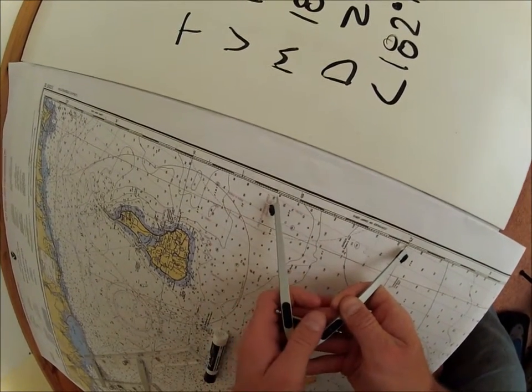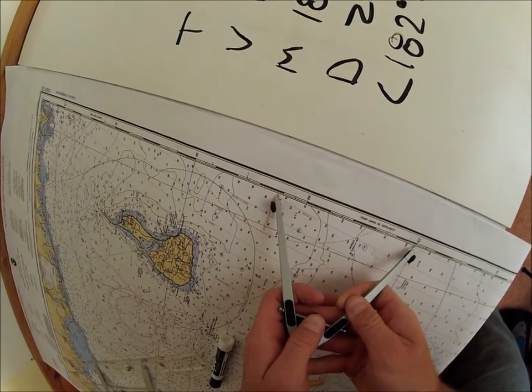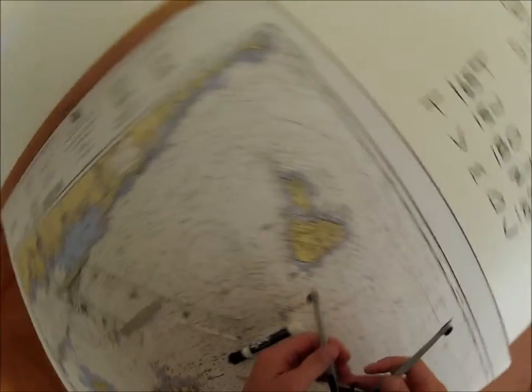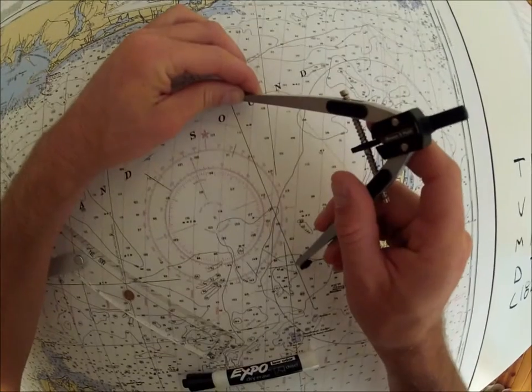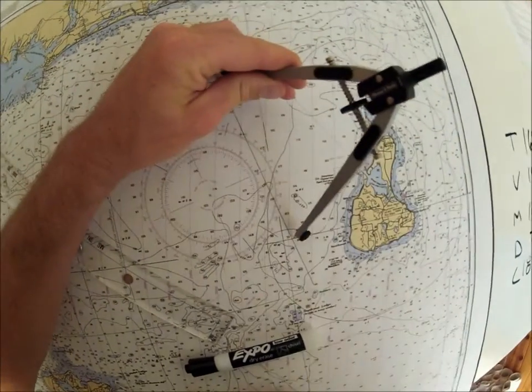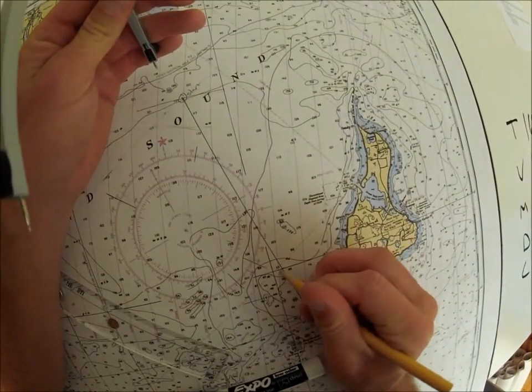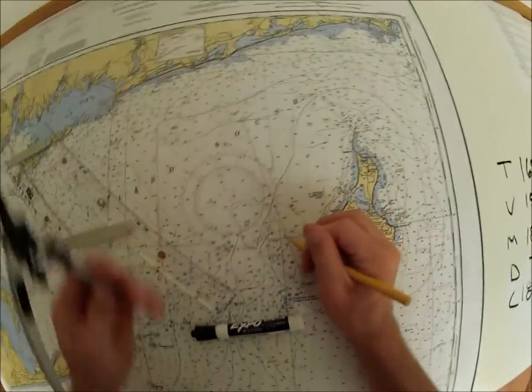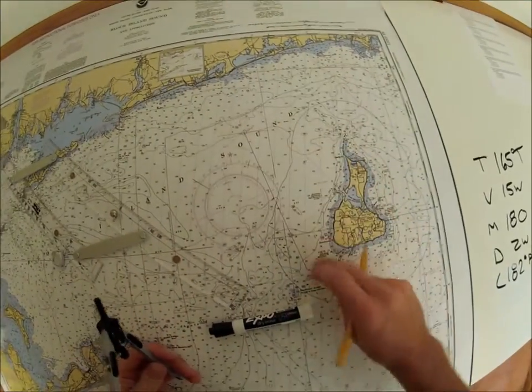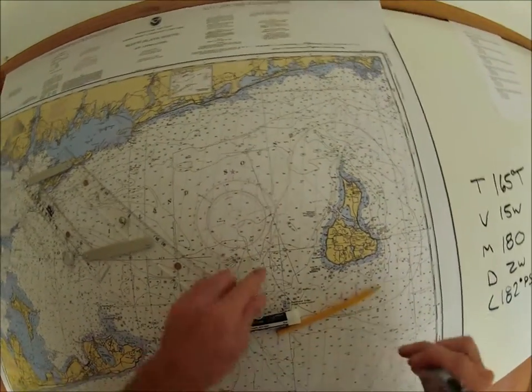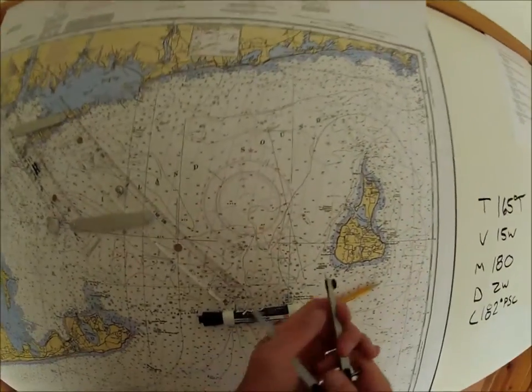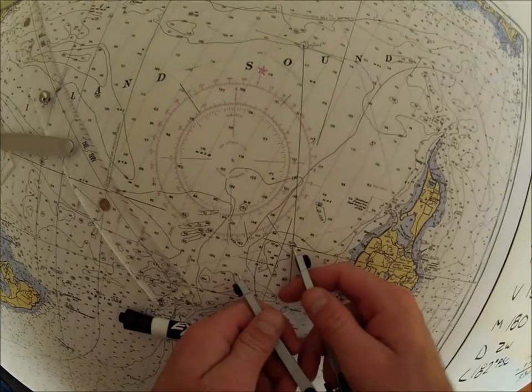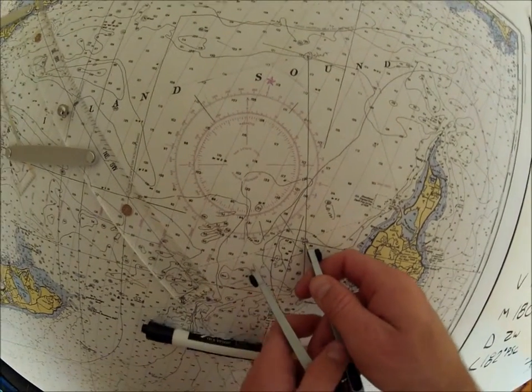We should travel 6.2 nautical miles down this line. 5, 6.2, all right from the start, down 6.2. Okay, this is where we reckon we should be. This is our dead reckoning line. That's where we reckon we should be. We ended up here, so a current pushed us this way.